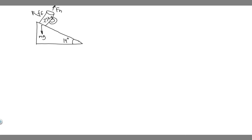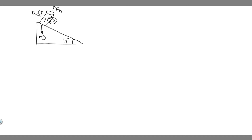When I say x and y on this problem, the axis along the incline surface is going to be the x-axis, and then perpendicular to the incline is the y-axis. So the x component is along the incline, and the y component is perpendicular to it — you can imagine it sort of like this, where this would be the x and this would be the y.